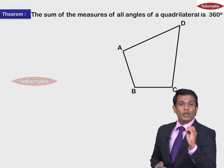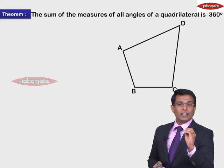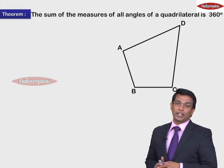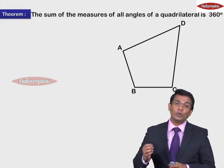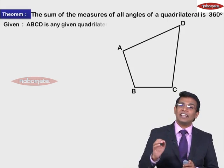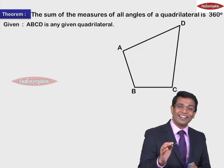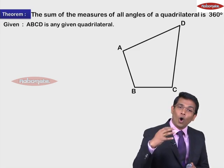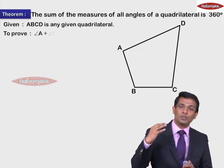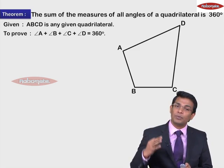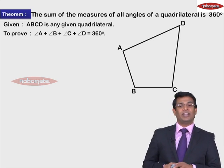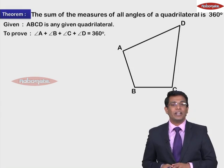We need to prove that the sum of all angles of this quadrilateral is 360 degrees. But before that you need to write the given. So in the given we'll mention ABCD is any quadrilateral. And you need to prove that all angles sum — that means I need to prove: measure of angle A plus measure of angle B plus measure of angle C plus measure of angle D is equal to 360 degrees.